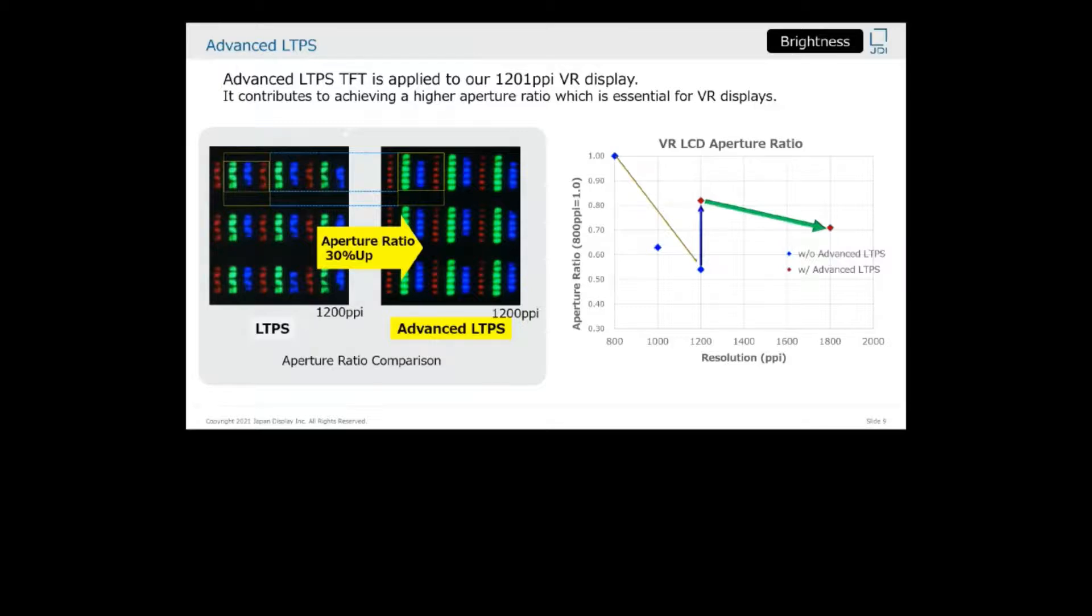And you can see a 30% greater aperture ratio for the same 1200 PPI resolution. The right side image is the aperture ratio transition chart. You can see at 1200 PPI we can achieve a significant step up in aperture ratio by applying our advanced LTPS.